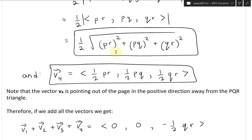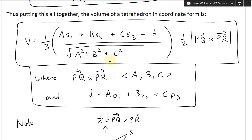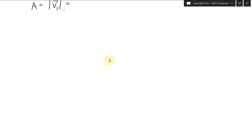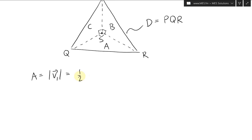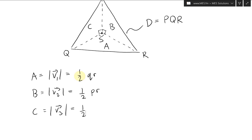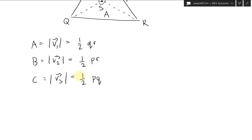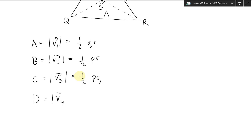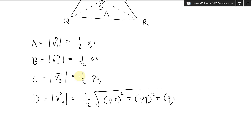We can move the one half inside each expression. So: A equals one half QR, B equals one half PR, and C equals one half PQ. Then D equals one half times the square root of PR squared plus PQ squared plus QR squared. The order of terms is slightly different but equivalent.